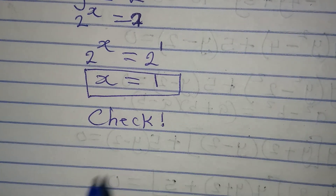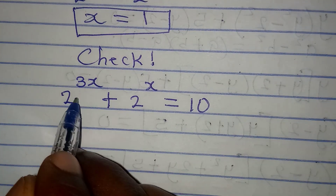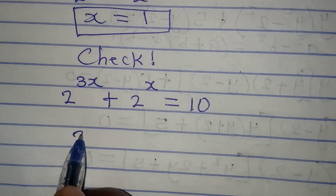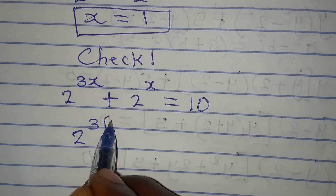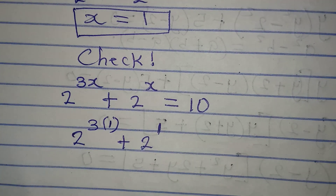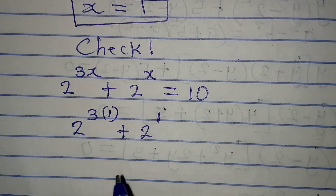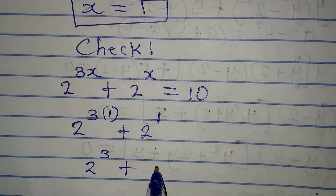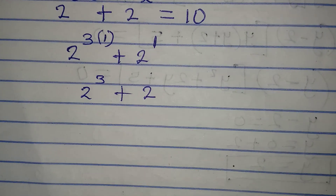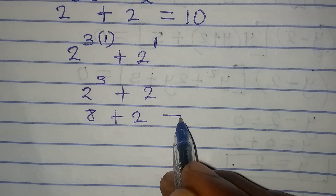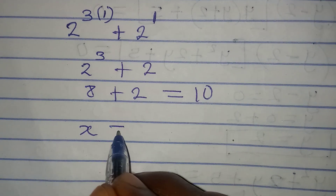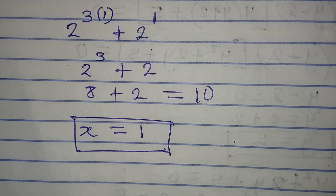Let's verify by checking x equals 1 in the original equation. We have 2 to the power of 3 times 1 plus 2 to the power of 1. That gives 2 to the power of 3 plus 2, which is 8 plus 2, and that equals 10. So x equals 1 is correct. Thank you for watching.